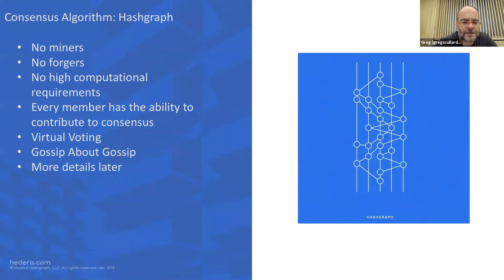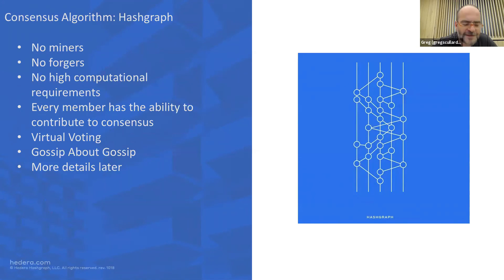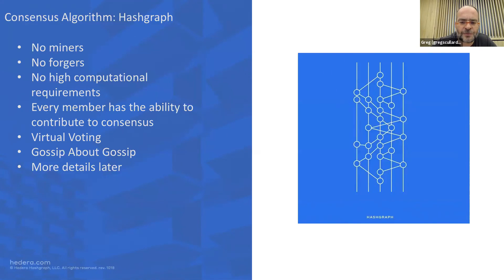Hashgraph is somewhat different — there are no miners and no forgers. It's highly efficient and we'll go into more detail on the algorithm itself later on. Every node is able to contribute to consensus, and that will be based on proxy staking, which we'll cover later. It's fundamentally different from previously known consensus algorithms, and that's probably one of the reasons you're here.